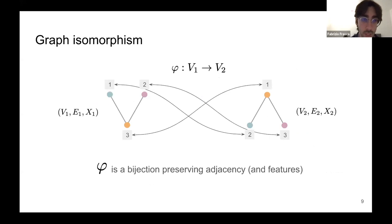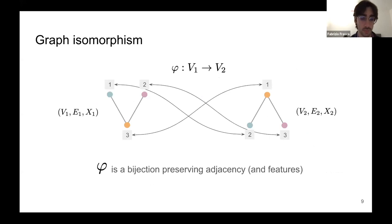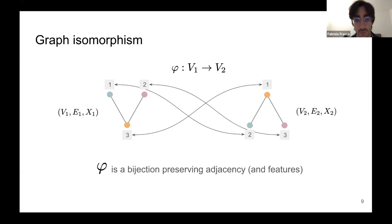A very important concept for us is graph isomorphism. Two graphs may or may not encode the same relational structure. We formalize this with isomorphism: two graphs encode the same relational structure if there exists a bijective mapping between their node sets that preserves adjacency and, for attributed graphs, also preserves the node features.